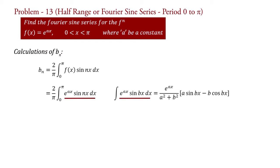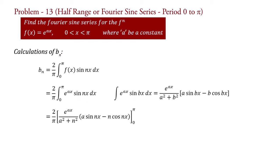In our formula, b = n. Therefore, applying this formula, we can write bn = (2/π) · e^(ax) / (a² + n²) · [a sin(nx) − n cos(nx)], evaluated with limit 0 to π.